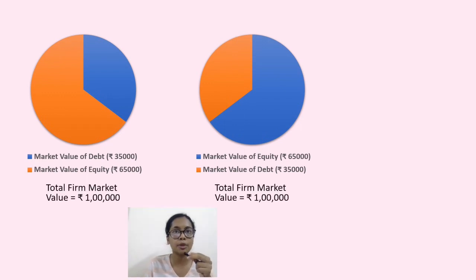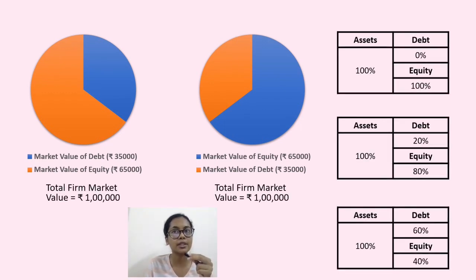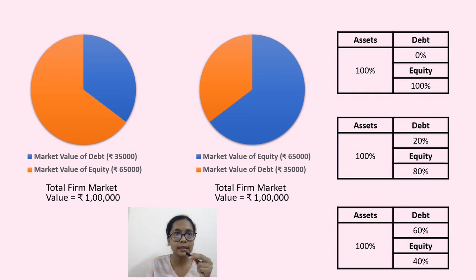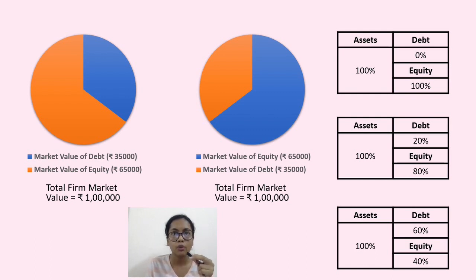Under the MM approach, the value of the firm is equated with a pie, also represented in the form of a balance sheet. It can be seen that the value of the firm is not affected by the debt or equity presence. Whatever be the composition of debt or equity, what is important is the value of the firm — the value of the pie chart amounting to rupees 1 lakh — being unaffected by the presence of debt or equity.